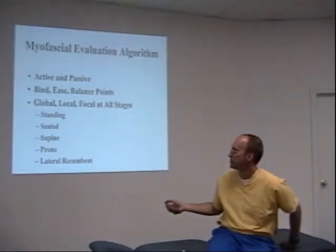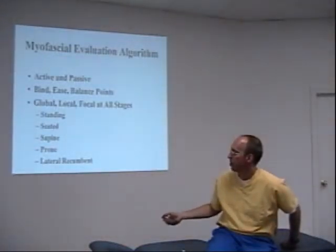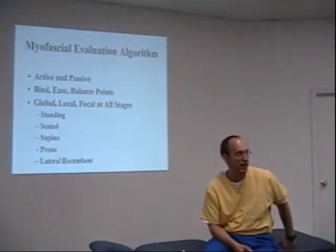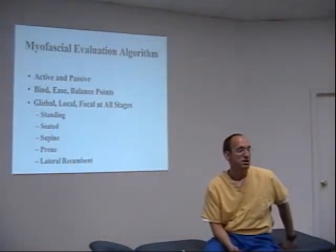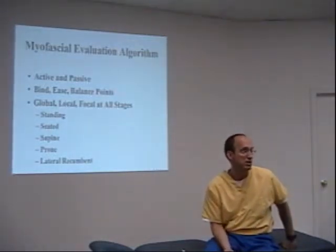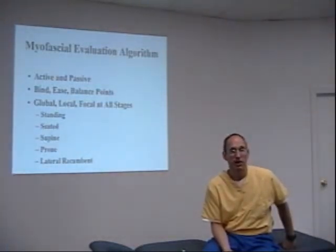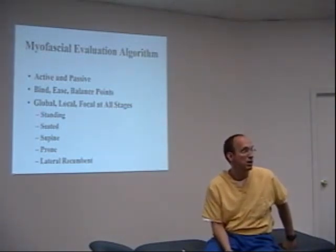We can check and evaluate people from the standing position, seated position, supine, prone, lateral recumbent — all fair game, because that's how people exist in all these positions. You've got to decide which is the easiest way to get the job done. What do you have access to? What are they comfortable with? You might have somebody in a wheelchair and you've got to treat them seated — you should know how to do things seated.